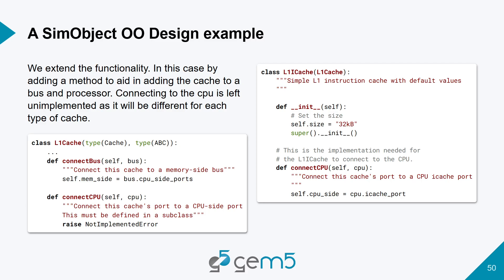This was an example of inheriting from a gem5 SimObject that already exists to get something that you want. In our example, we had this intermediate step — the L1Cache in the middle — to define its API, with L1iCache as the concrete implementation.